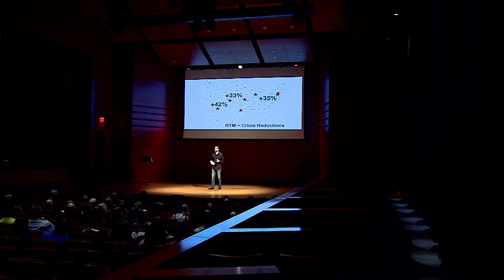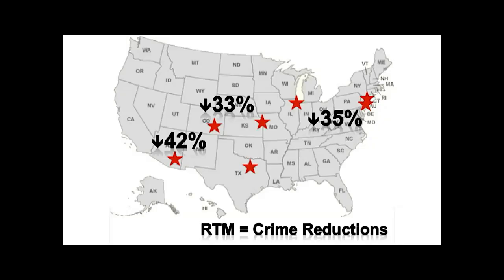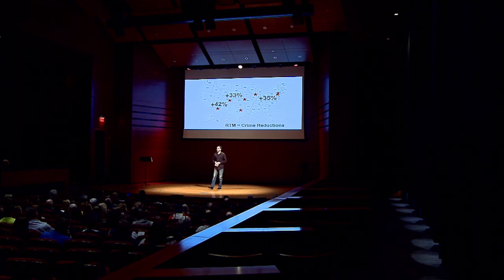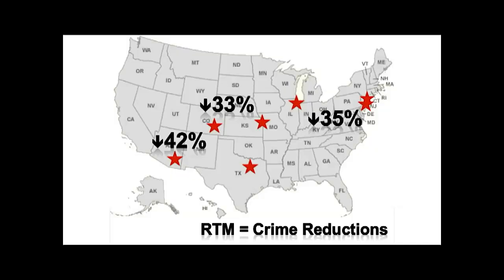By now you're probably wondering if focusing on risky places and not people can really reduce crime — and the answer is absolutely yes. With funding from the Department of Justice, we conducted experiments in multiple cities across the United States. Policing activities focused on high-risk places yielded many benefits, including 35% fewer gun crimes in Newark, 33% fewer motor vehicle thefts in Colorado Springs, and 42% fewer robberies in Glendale, among many other positive outcomes in all the jurisdictions we studied.